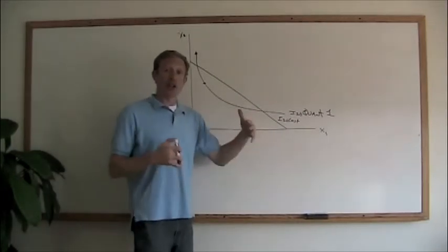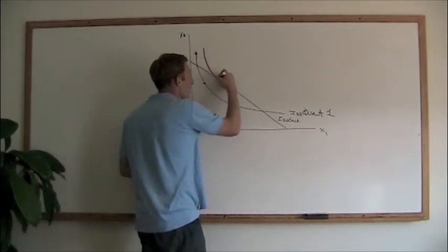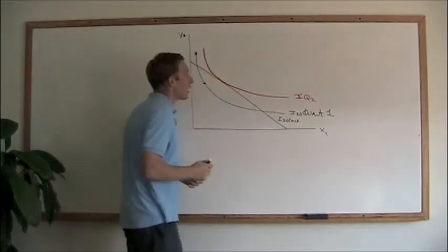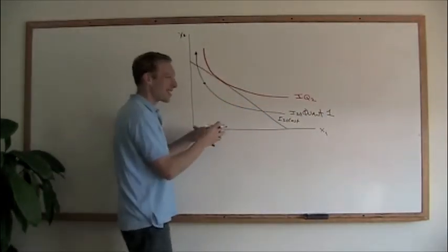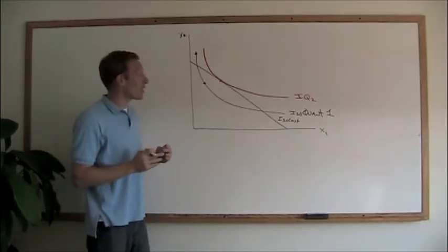Now, isoquants look a lot like indifference curves, where we have a whole family of them. And if we can find an isoquant, I'll just call this IQ 2, if we can find an isoquant that just touches our isocost line, it's just tangent to the isocost line,